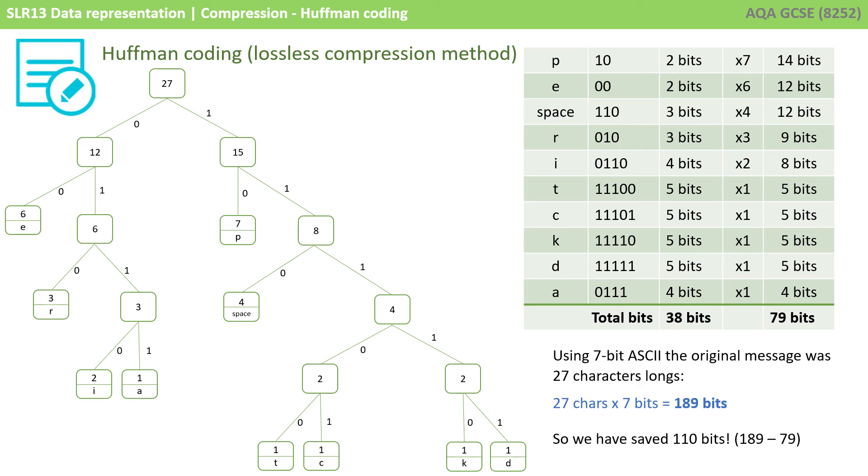Of course, we also need to take into account the frequency with which each character appears. Although the character P takes 2 bits to encode, a 1 and a 0, there are 7 occurrences of the character P. Therefore, this is 2 times 7, or 14 bits. This gives us a total of 79 bits to encode this message using Huffman encoding.